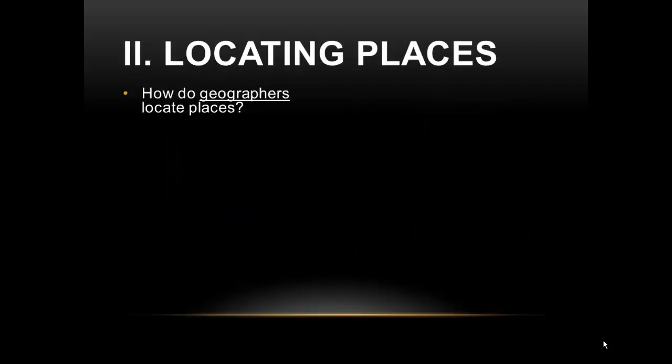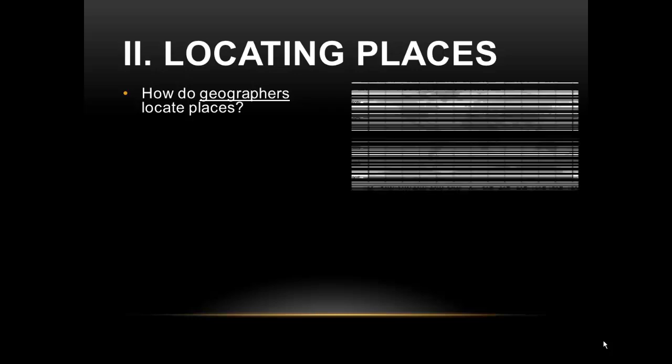So that brings us to the question: how do geographers locate places? Well, first, let me explain what a geographer is. A geographer is anyone who studies the Earth or the living things that inhabit the Earth for a living. If you think about Indiana Jones — he went all over the world, he studied the Earth. Or think about anyone on the census. So anyone who studies the Earth or the living things that inhabit the Earth is a geographer.